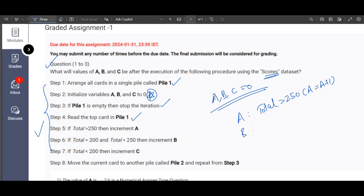Now coming to B. If total is in between 200 is less than total is less than 250, in such case B gets incremented by one. Now coming to the C case. If total is less than 200, then C gets incremented by one.